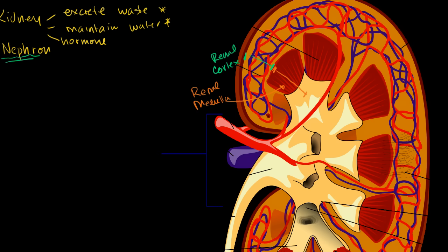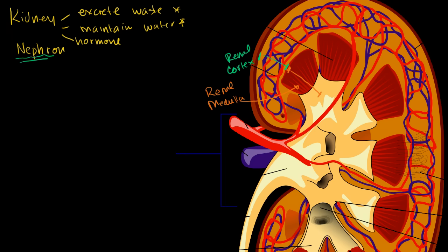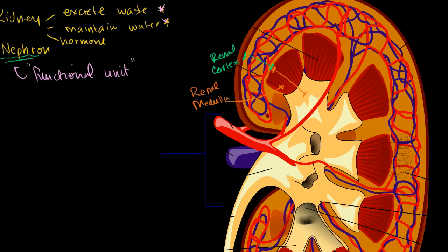The functional unit of the kidney is the nephron. It's called a functional unit because that's the level at which the two major functions of the kidney — waste excretion and maintenance of water levels in our blood system — are happening. A nephron dips down into the medulla, goes back into the cortex, and then dumps into collecting ducts. The fluid ends up in the ureters and then our urinary bladder, which we can later excrete.